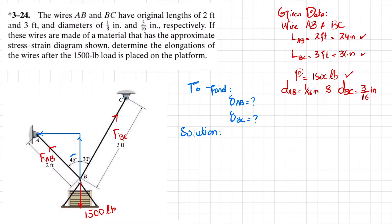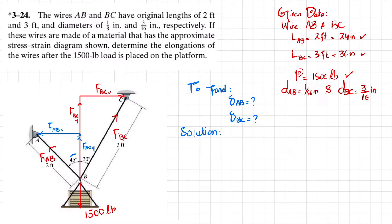For wire BC we have two components: a vertical component FBC_y and a horizontal component FBC_x. Similarly, wire AB has a horizontal component FAB_x and a vertical component FAB_y. We will apply the equilibrium condition at joint B. The forces developed in wires AB and BC can be determined by applying these equilibrium conditions.